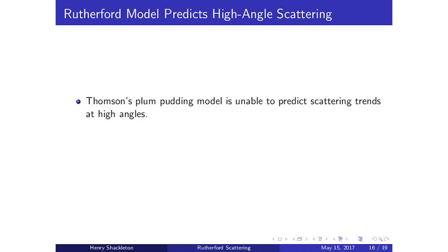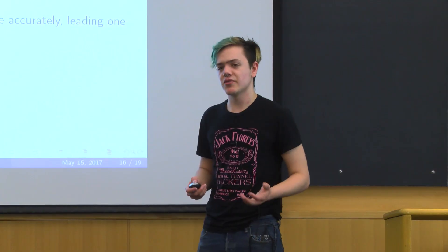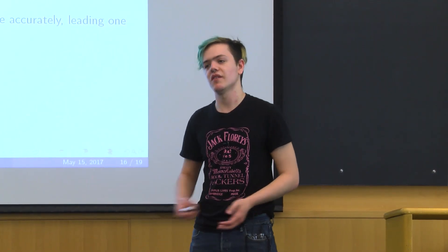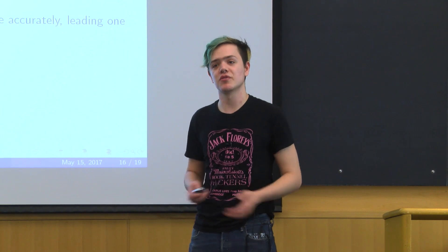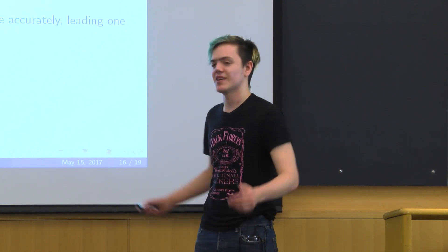In conclusion, Thomson's plum pudding model is found to be fundamentally unable to describe the scattering rates we observe at large angles. The Rutherford model more accurately predicts this gradual falloff, which suggests a more Rutherford-like view of the atom with a densely packed nucleus. Thank you.